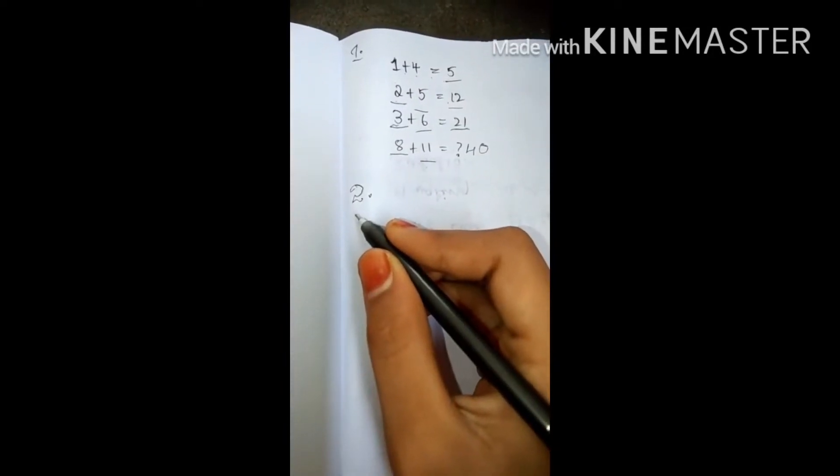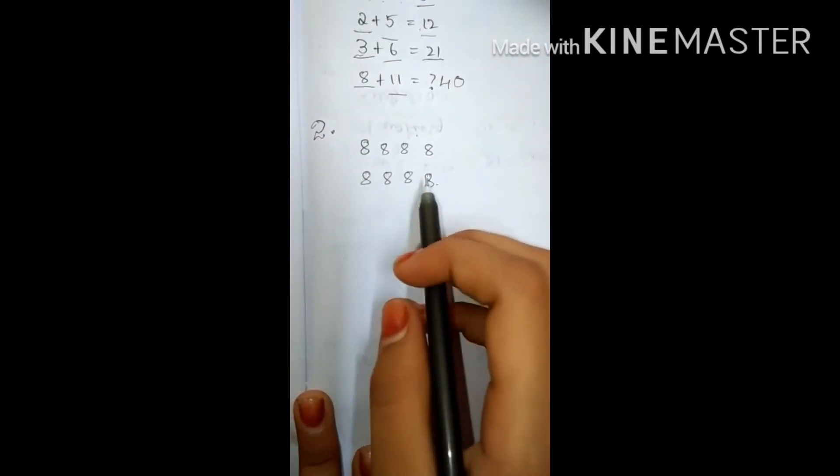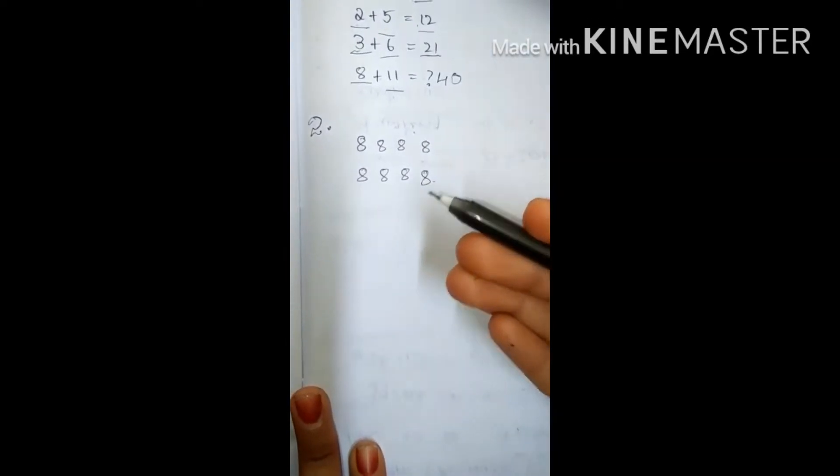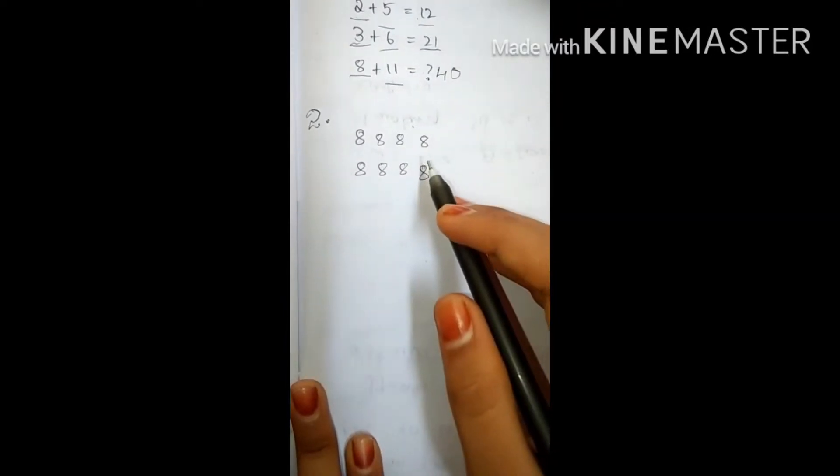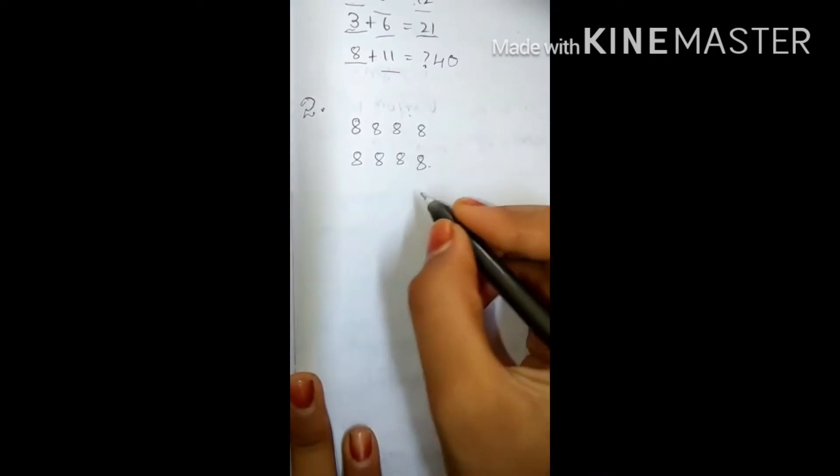And second question is, our second puzzle is, here we have 8 eights. With that we should do plus, minus, subtraction, anything, but we should get 1000. Our answer should get 1000. What we should do is, see here, I am solving that.